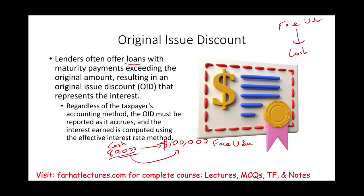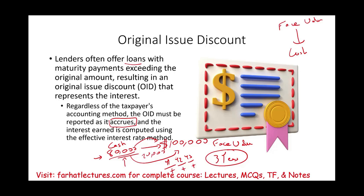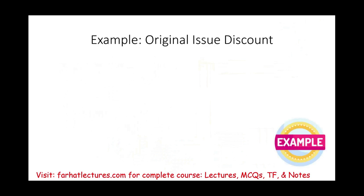Regardless of the taxpayer's accounting method, original issue discount must be reported as it accrues, and interest earned is computed using the effective interest rate method. You may not pay this face value until three years later, but let's assume you deposited $80,000 in the bank and you're going to get $100,000 three years from now. Your total return is $20,000. You're not going to get it until three years later, but each year — year one, year two, year three — you have income that you must report. In total, you're going to get $20,000. Let's take a look at an example.